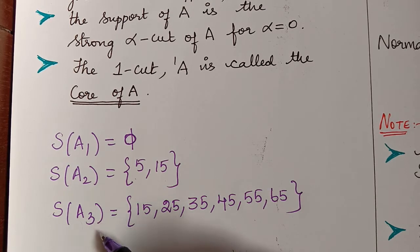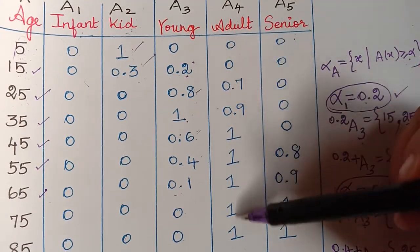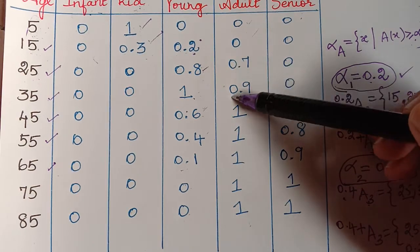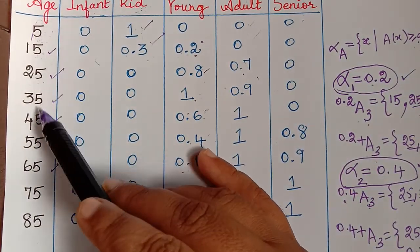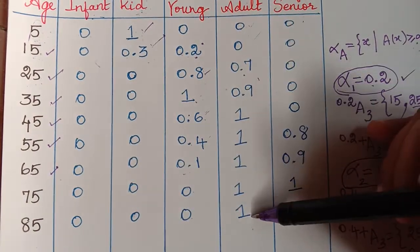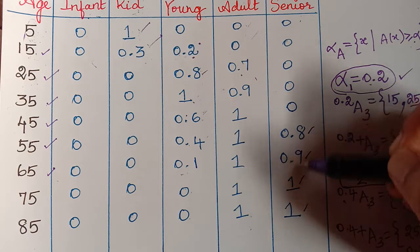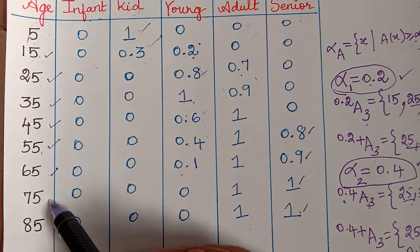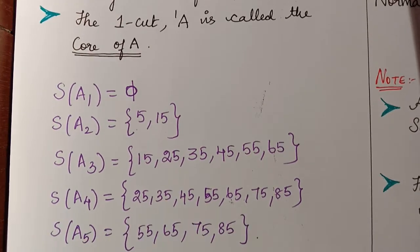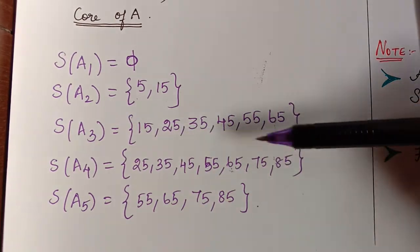We have two more fuzzy sets in the example. For fuzzy set A4, except two elements, all membership grades are greater than 0, so the corresponding elements 25, 35, 45, 55, 65, 75 and 85 come under the support of A4. For A5, the grades 0.8, 0.9, 1 and 1 are greater than 0, so the corresponding elements 55, 65, 75 and 85 form the support of A5. We observe that all supports of a fuzzy set are crisp sets.